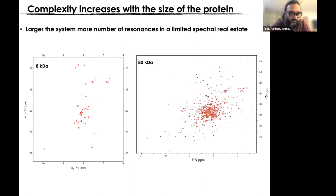Within a given spectral real estate — anywhere from about 5 ppm to 11 ppm, where the amide chemical shifts normally come — there are a lot more resonances for the 80 kilodalton protein than the 8 kilodalton protein. Two things happen when we go to larger molecular weights: you get a lot more resonances, 10 times more in this case, which causes spectral crowding. The second thing is that the line shape becomes broader as you go to higher molecular weight in solution NMR.